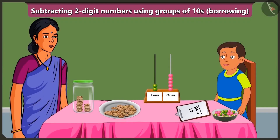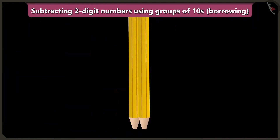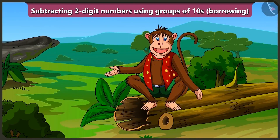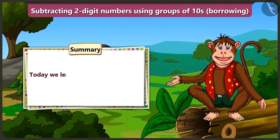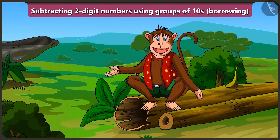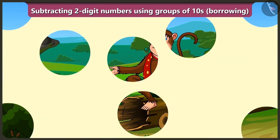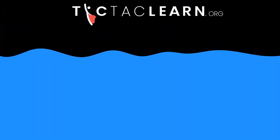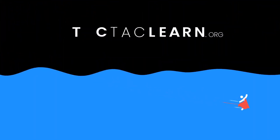Well done, Bubbly. You have subtracted without even writing. Yes, Mummy, you explained it to me very well. Friends, today we learned subtraction of two-digit numbers by borrowing without writing, with the help of Bubbly's abacus. In the next video, we will learn to trace some of the things in our surroundings. See you next time. Thank you.